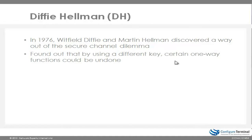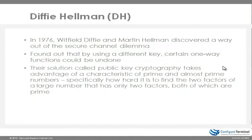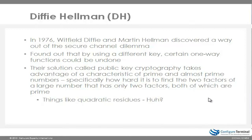They found out that by using a different key, certain one-way functions could be undone. Their solution called public key cryptography takes advantage of a characteristic of prime and almost prime numbers — specifically, how hard it is to find the two factors of a large number that has only two prime factors. This uses things like quadratic residues. We as network engineers do not need to understand the math behind all of these algorithms; we just have to know when to apply them in production environments.